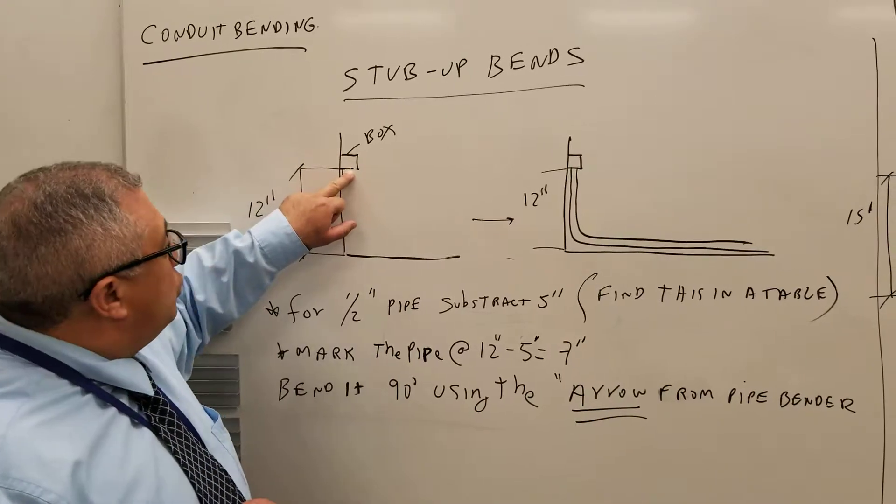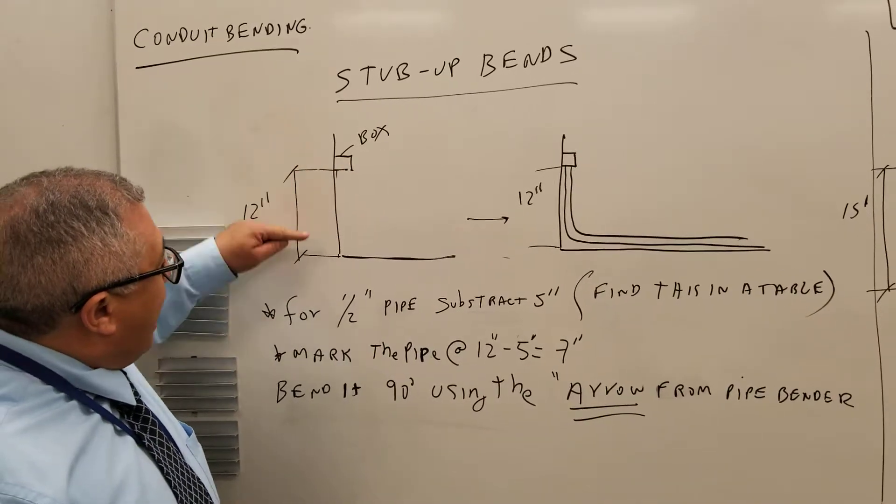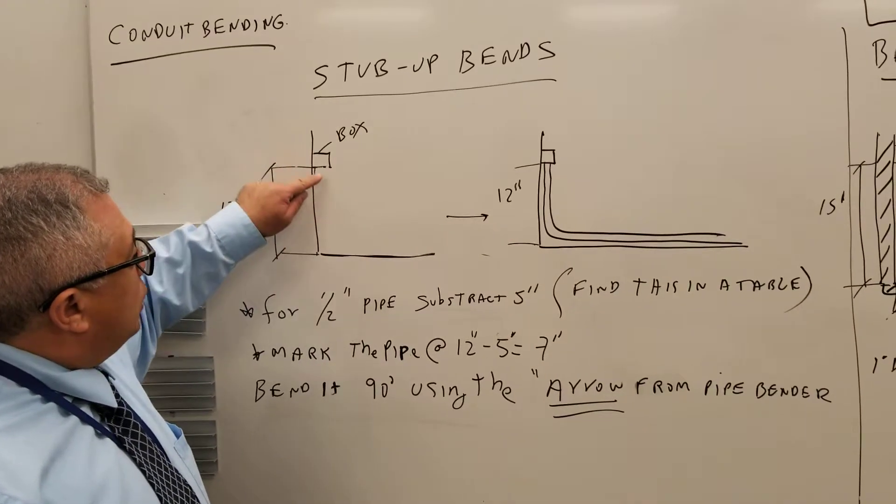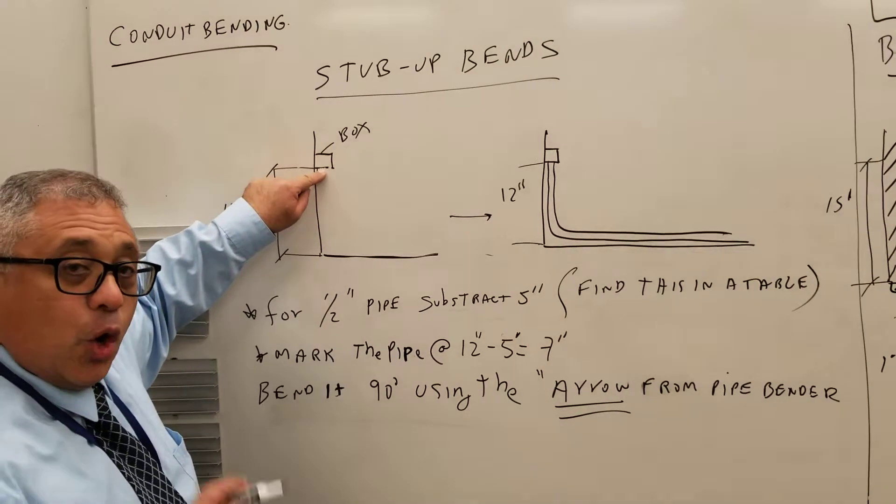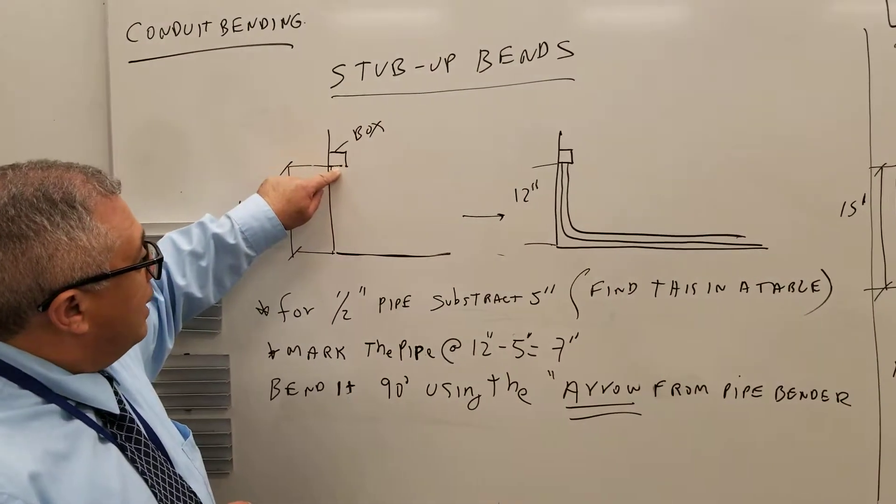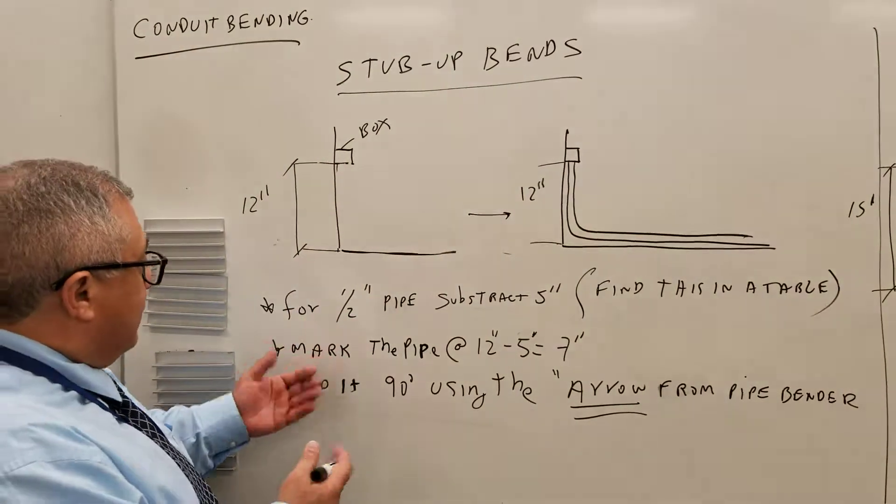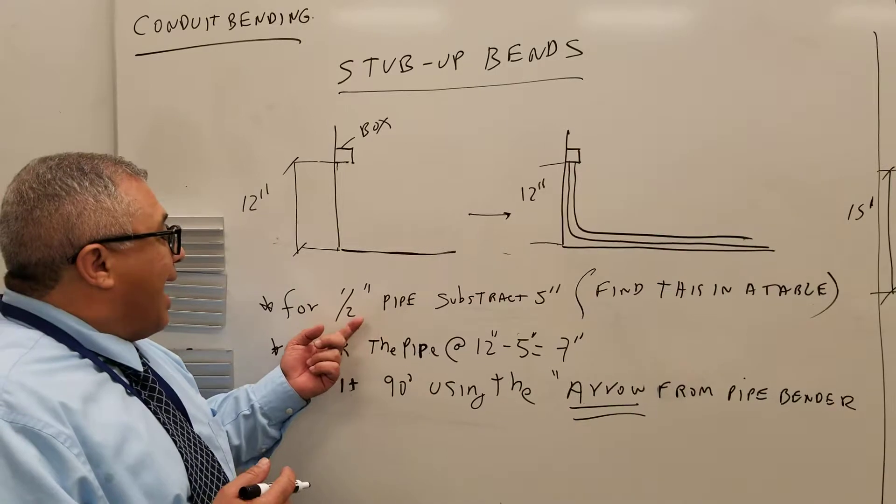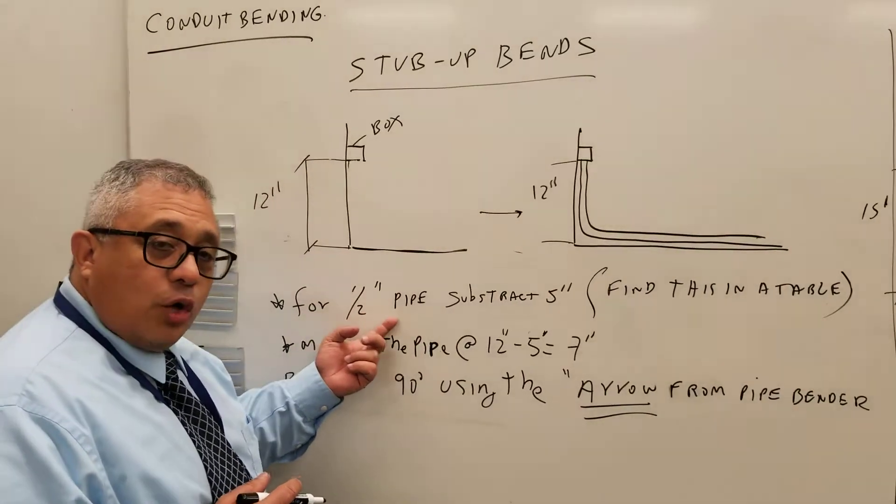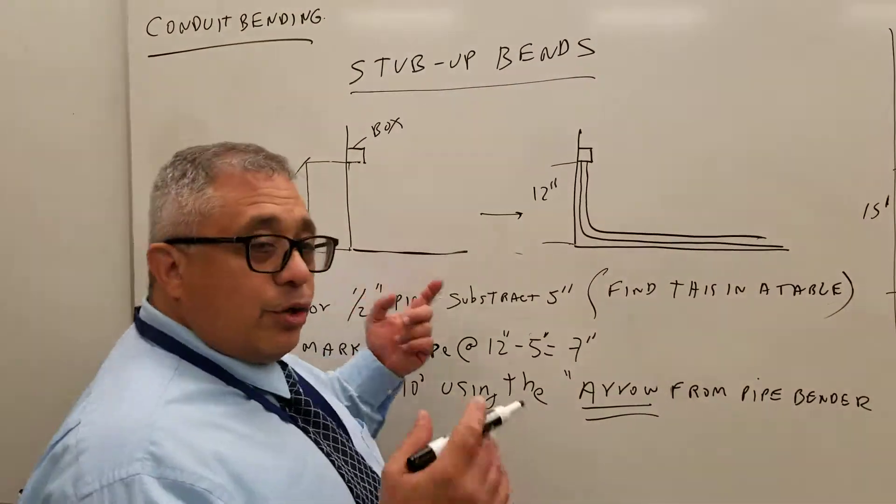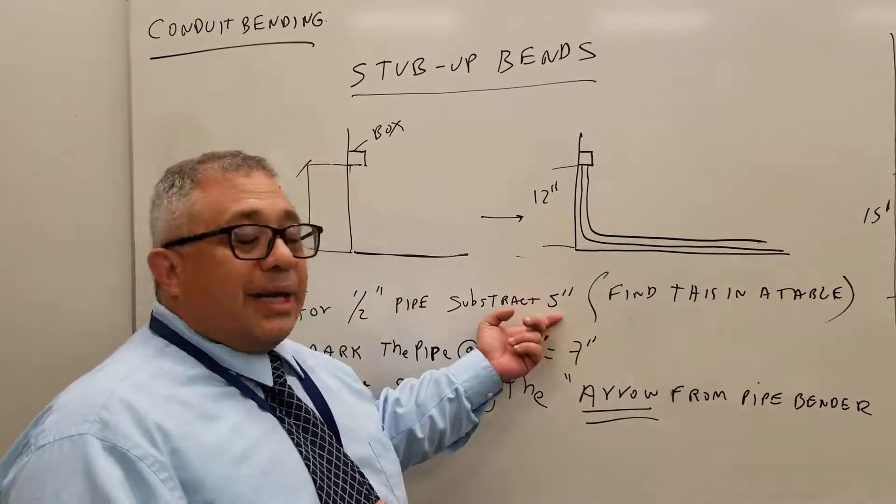The first thing you need to do is to measure the height from the floor to the lower part of the box and look at the table of your conduit. In this example, we're using half-inch conduit. According to the table, we need to subtract 5 inches.